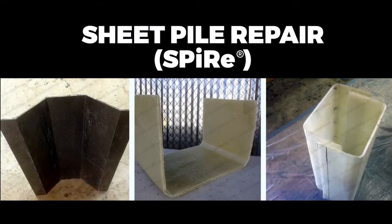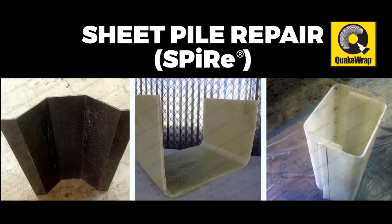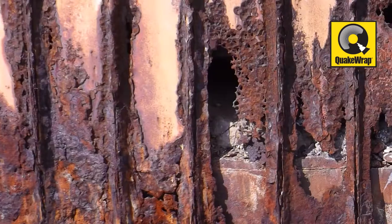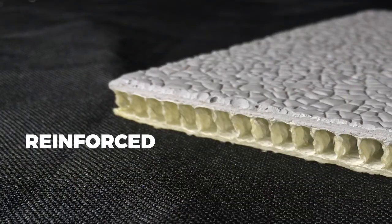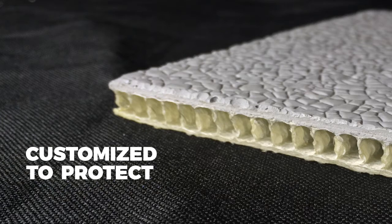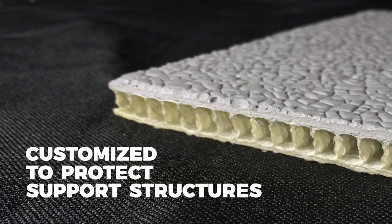The sheet pile repair or spire system from QuakeWrap can be used to repair almost any existing depleted or corroded pile or seawall. It is a stay-in-place reinforced FRP form which is customized to protect almost any support structure.